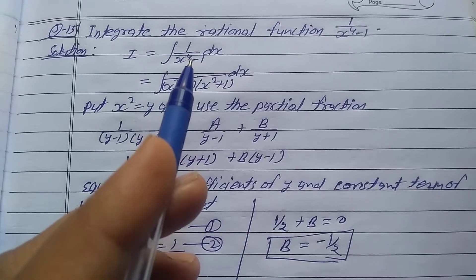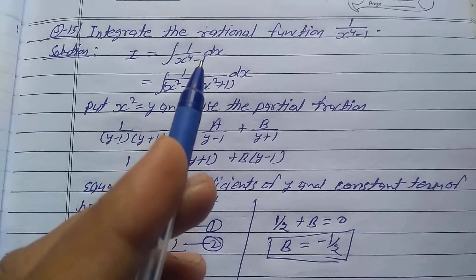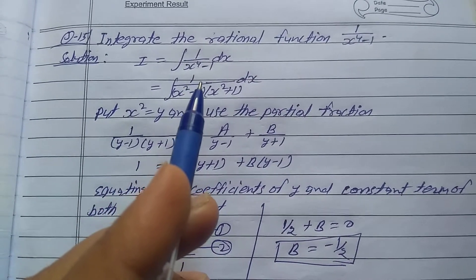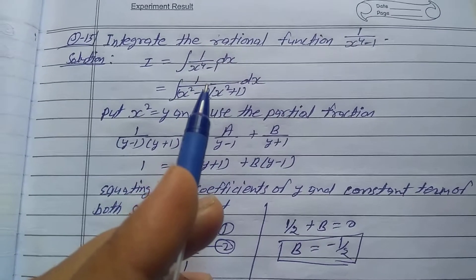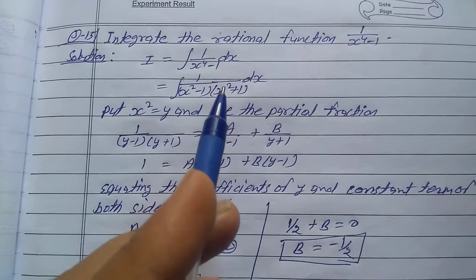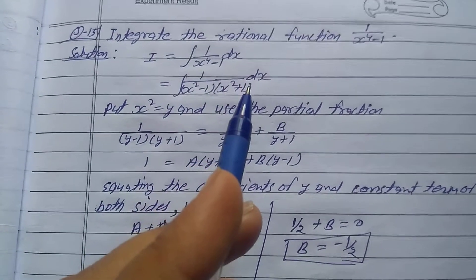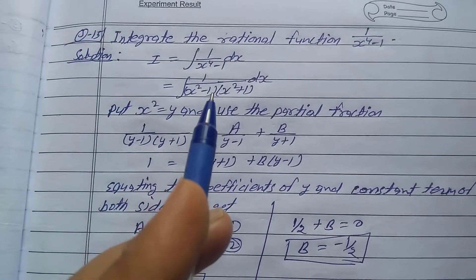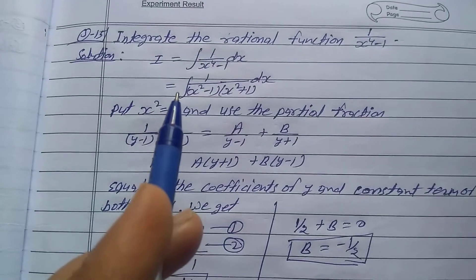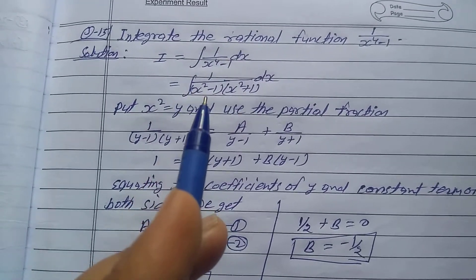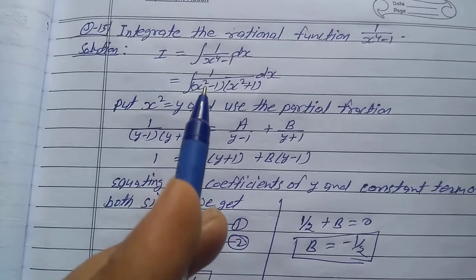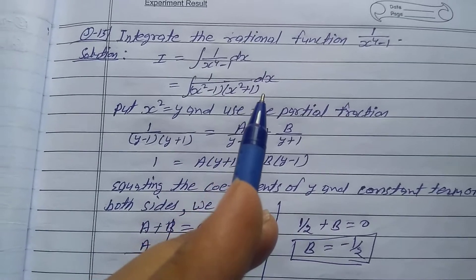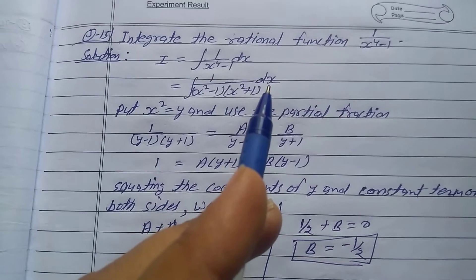1 upon x power 4 minus 1 is also written as bracket of x square minus 1 into bracket of x square plus 1. So I is equal to integration of 1 upon bracket of x square minus 1 into bracket of x square plus 1 dx.